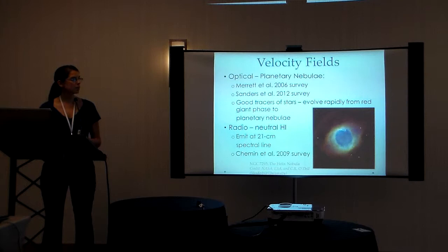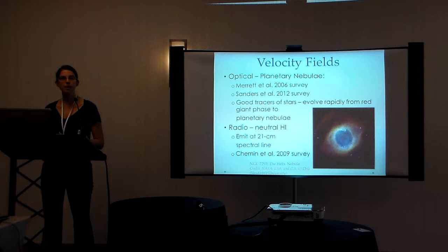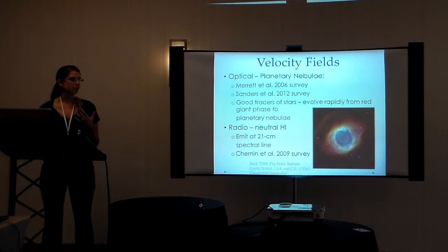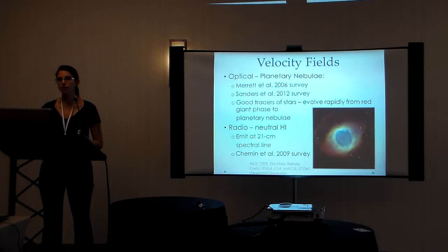We used planetary nebulae as tracers of stars because stars evolve very rapidly from the red giant phase to the planetary nebulae. And the planetary nebulae are preferred for observation as they emit very strongly in the optical region, particularly at the O3 line.